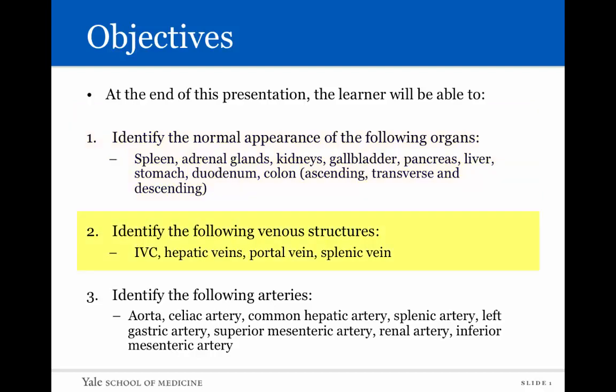You'll also be able to identify the following venous structures: the inferior vena cava or IVC, hepatic veins, portal vein, and splenic vein. And finally, you'll be able to identify the following arteries: the aorta, the celiac artery, common hepatic artery, splenic artery, left gastric artery, the superior mesenteric artery, the renal artery, and the inferior mesenteric artery.